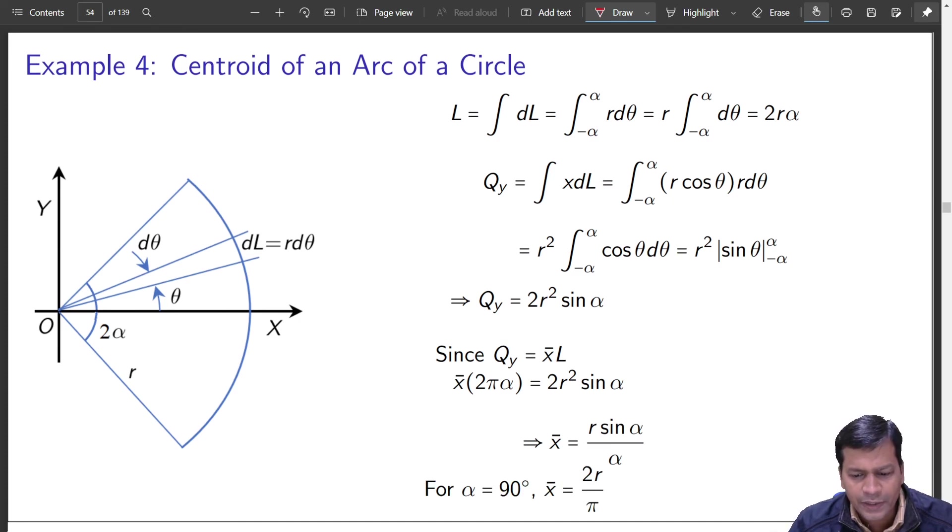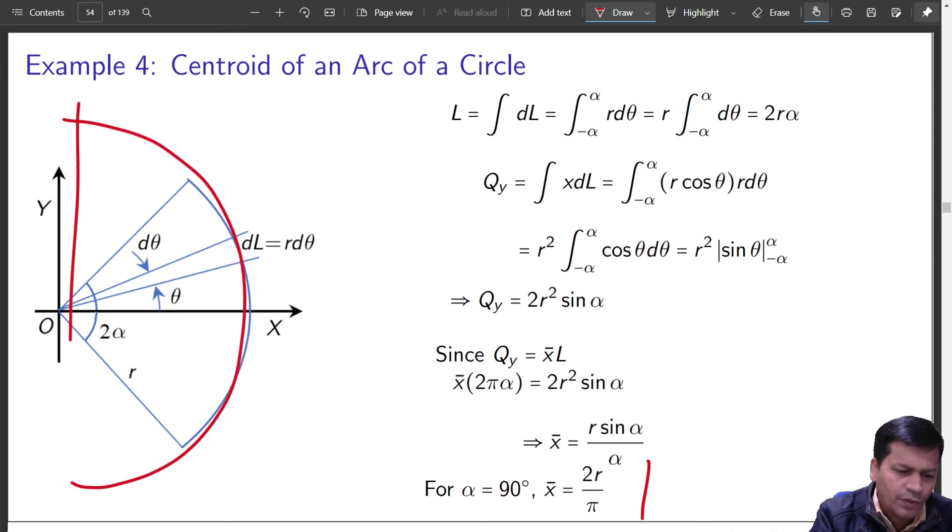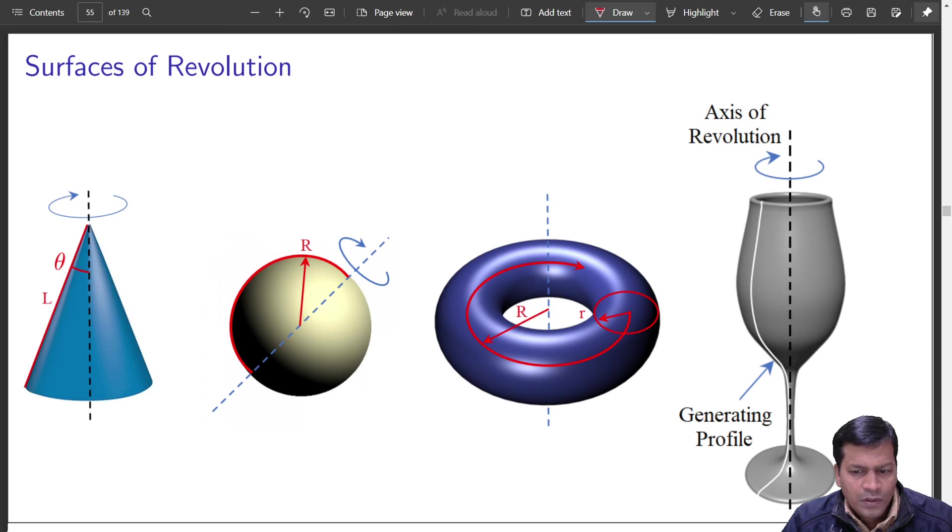So that is all and yes, this is if alpha is equal to 90 degree, it comes out to be this. Alpha is 90 degree means it is completely like this. Half of a disk. So that is a special case of this. Yes, yes any query here?